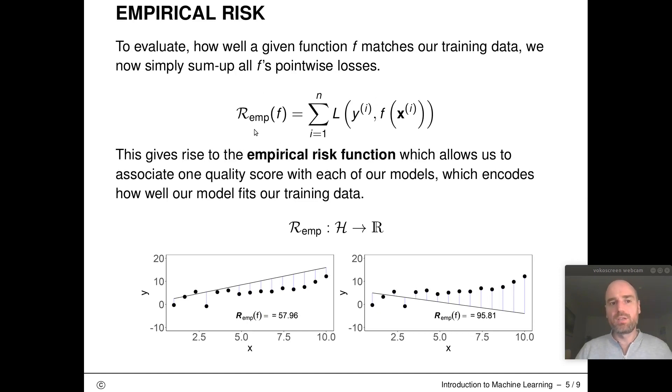We'll now call that the empirical risk. This empirical risk evaluates how well any given function F from our hypothesis space matches our training data because we are simply summing up all of F's point-wise losses over the complete training data set.